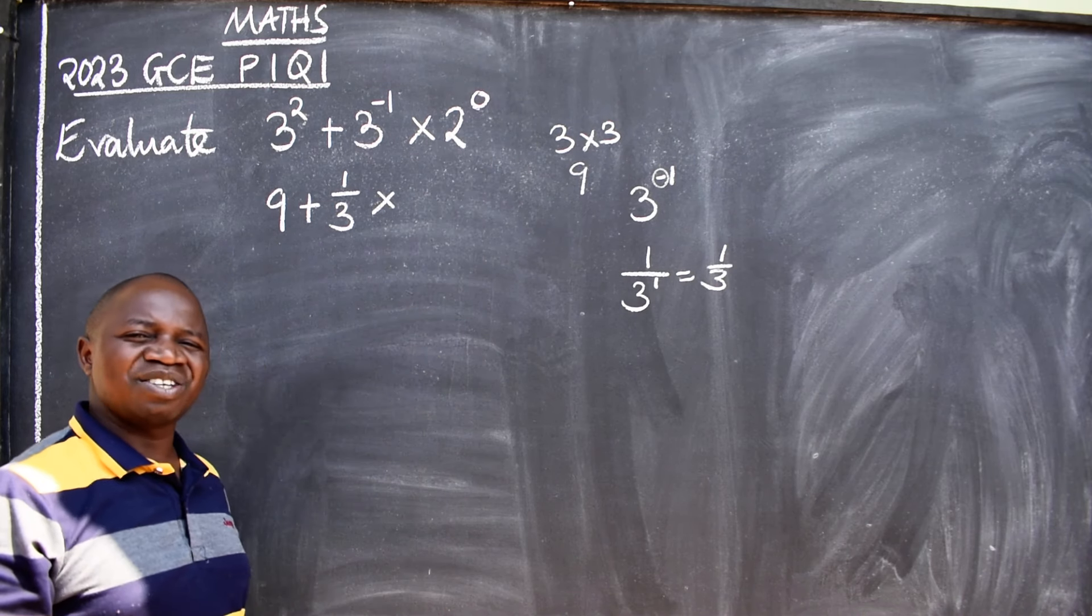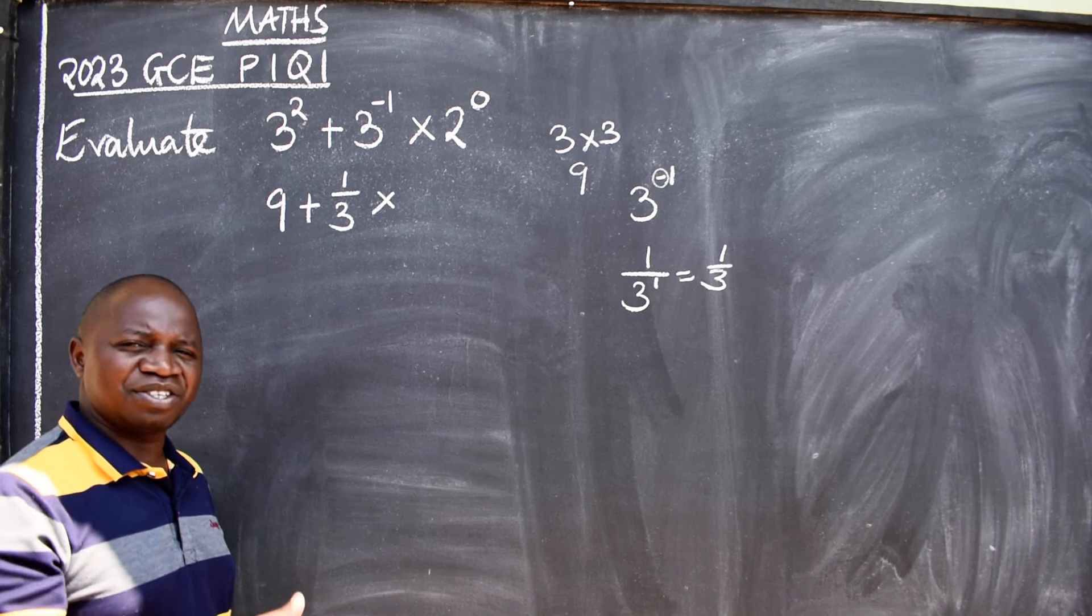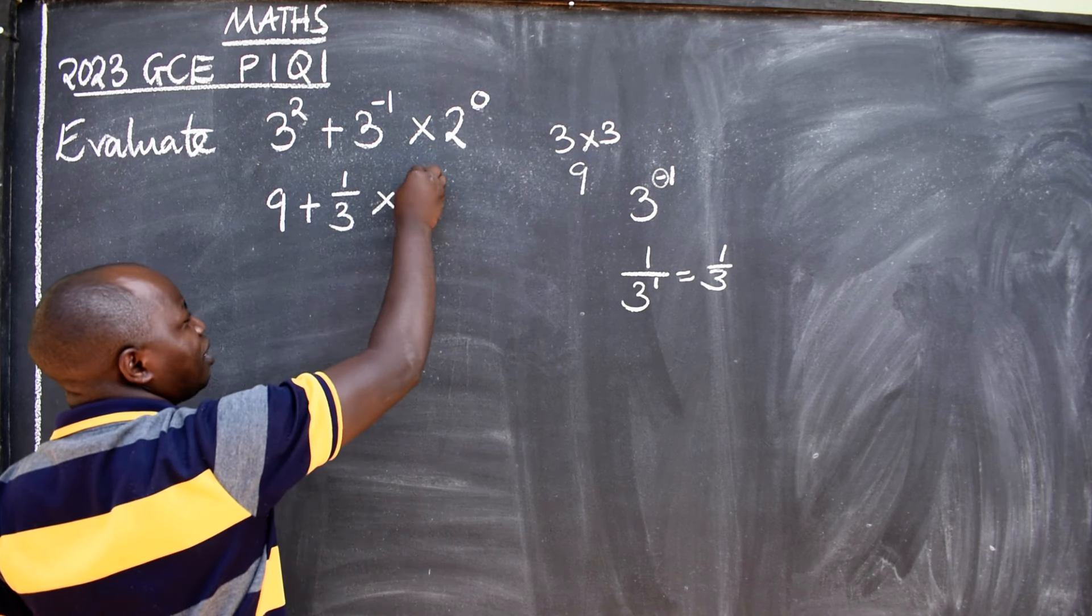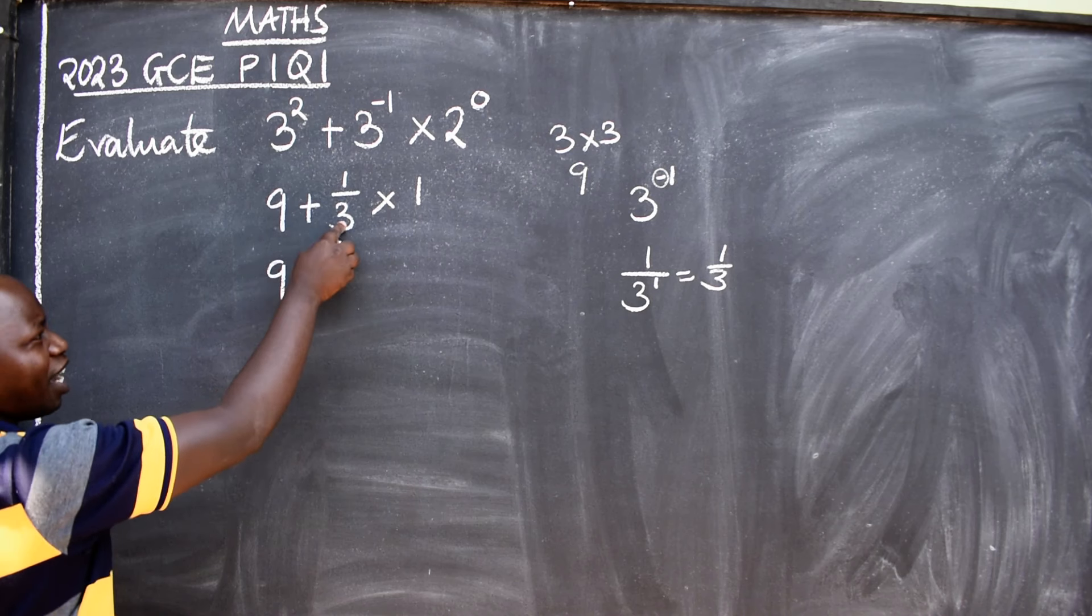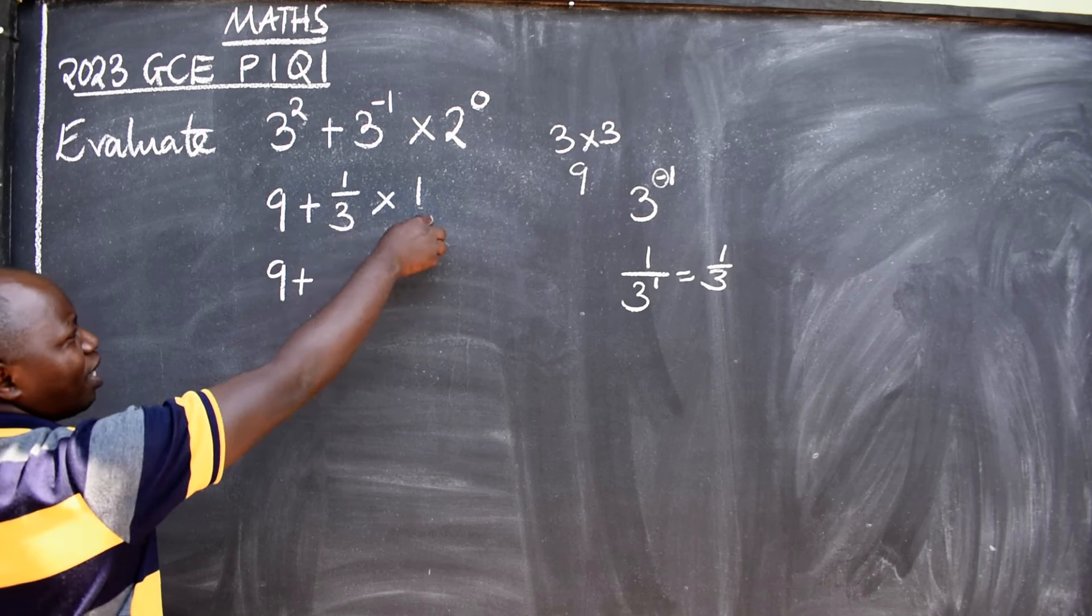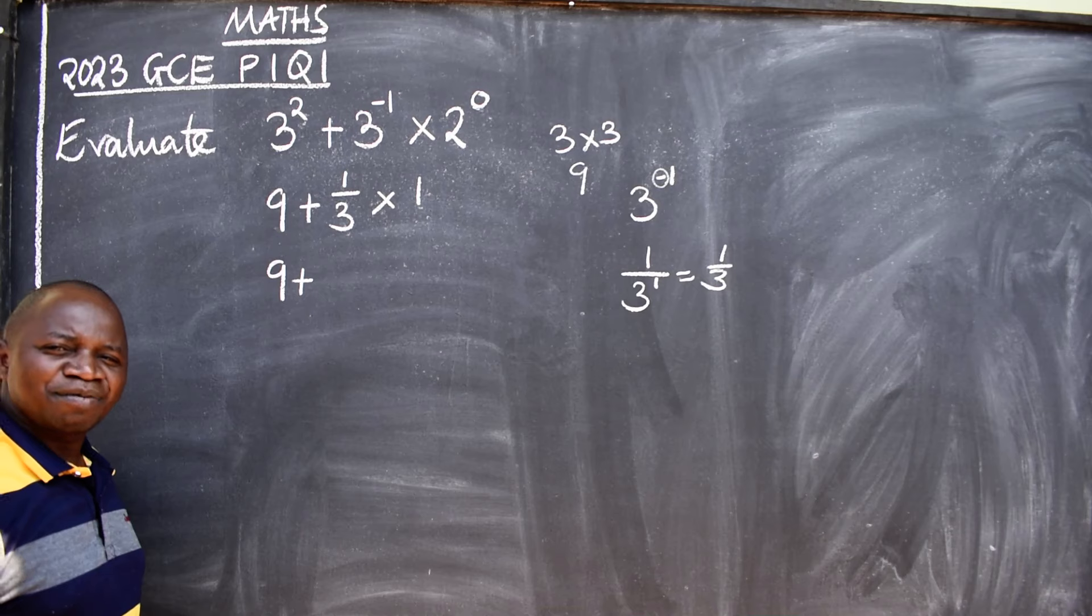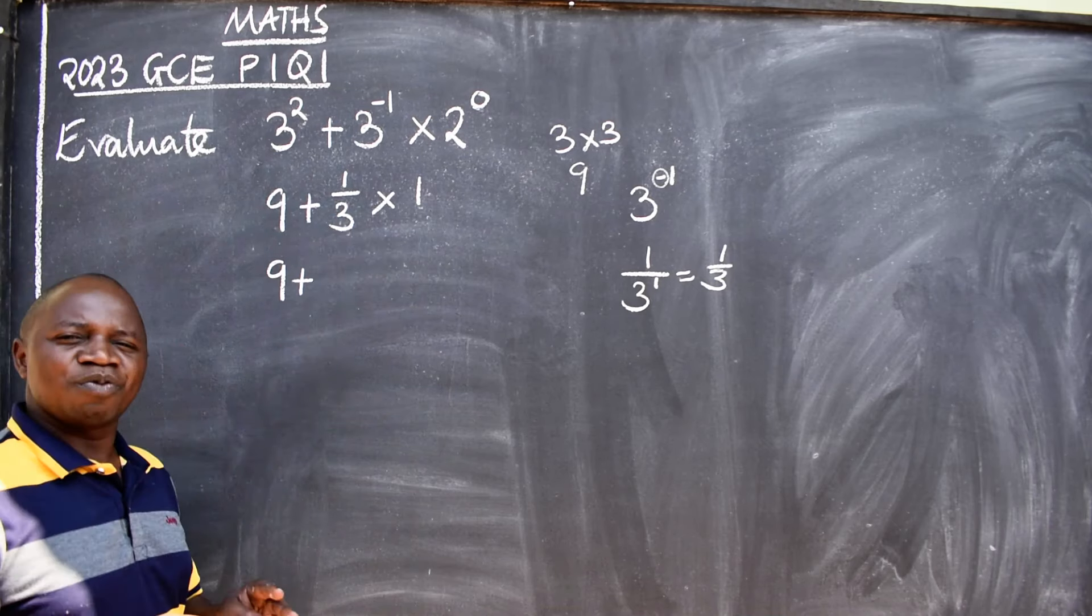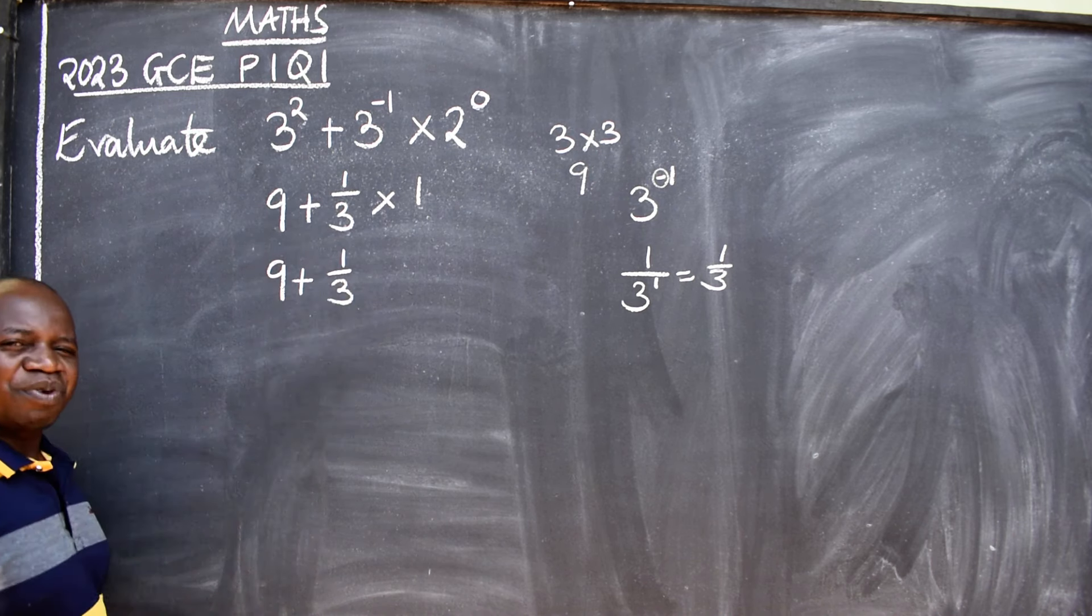Times 2 to the power 0. The laws of indices says any number or any letter raised to the power 0, the answer is 1. So whatever we have here is 1. We move on. 9, you cannot add before you multiply. Plus, let's now multiply this side. 1 over 3 times 1, what is the answer? Remember in paper 1, no calculator. So 1 over 3 times 1, anything you multiply by 1 is 1 over 3.